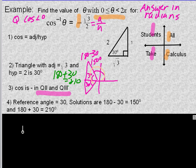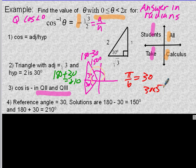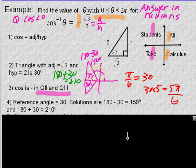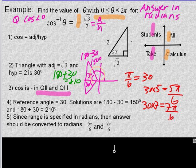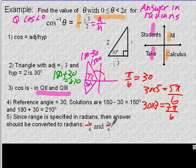Now convert to radians. I work in degrees until the very last step. I know that π over 6 equals 30 degrees. 150 is 30 times 5, so it's 5π over 6. And 210 is 7 times 30, so it's 7π over 6. The two answers are 5π over 6 and 7π over 6.